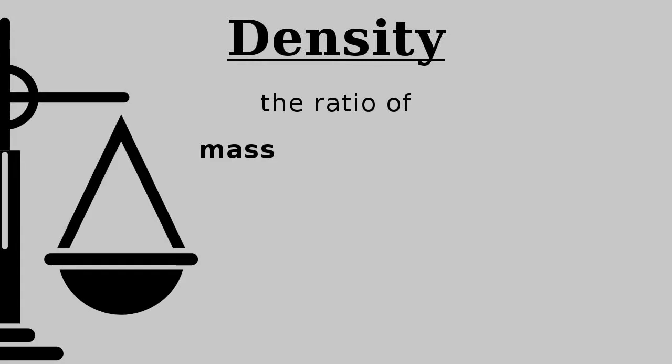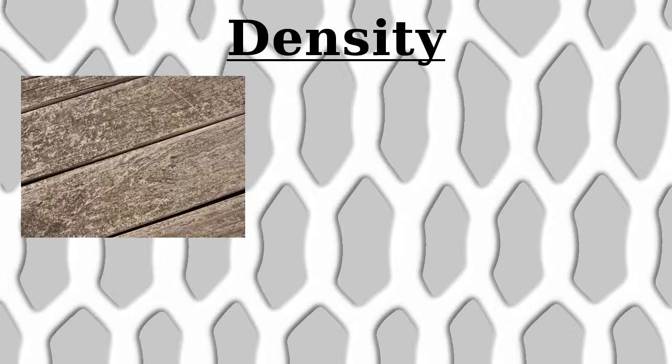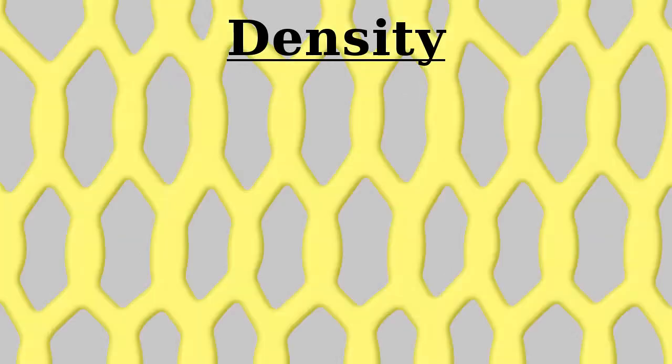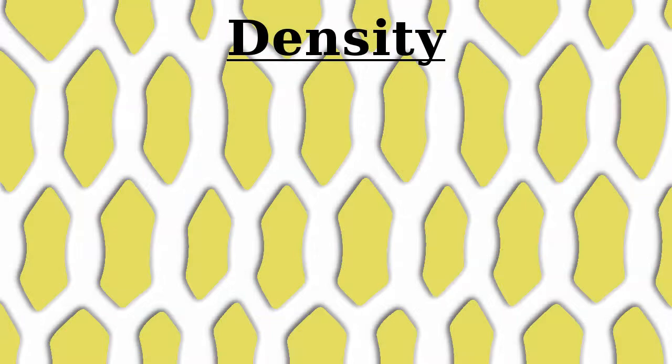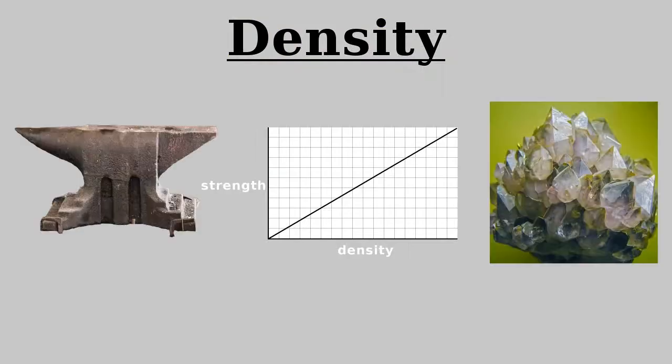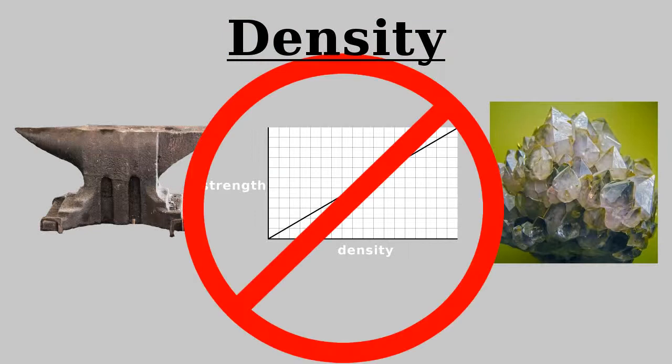Lastly, we have density. This is the ratio of mass to volume for a material. In porous materials, like wood and bone, density indicates how much solid matter is there versus how much is not, so it correlates to other properties well. But in non-porous materials, it is not directly related to strain, and is often not classified as a mechanical property.